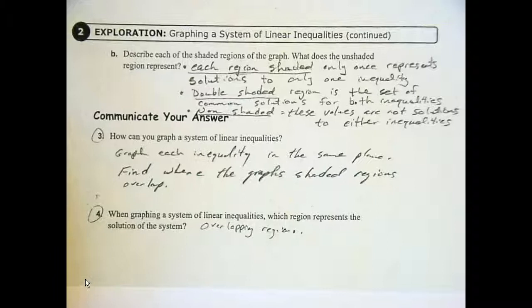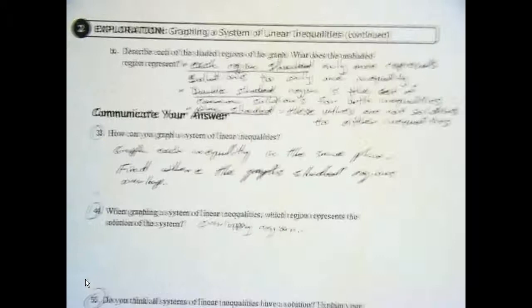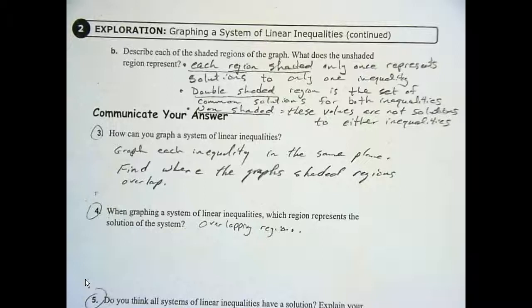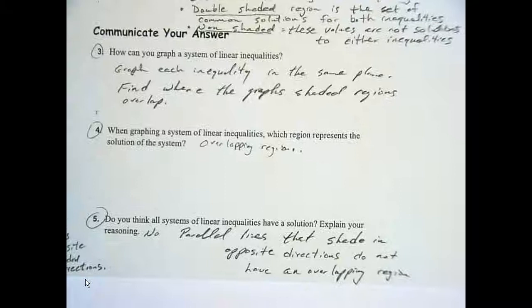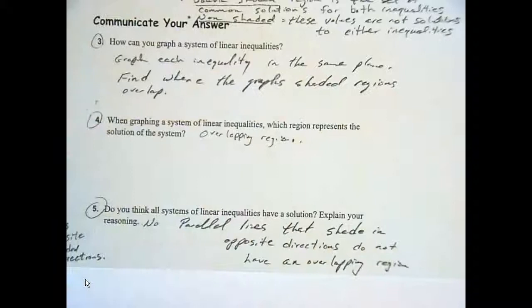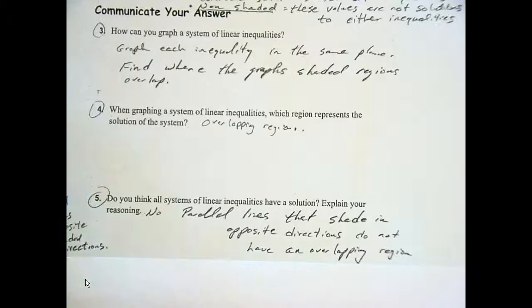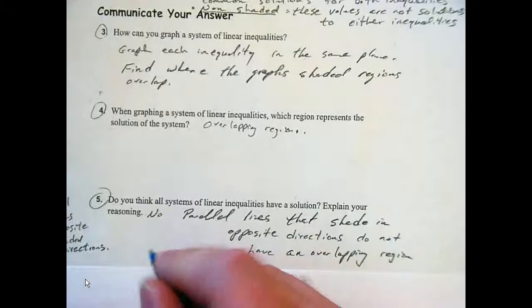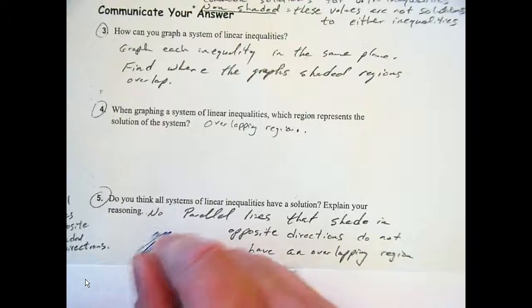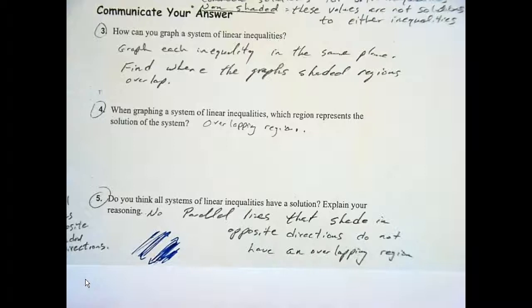Number three, do you think all systems will have a solution? When won't they? Yeah, parallel lines might not. It doesn't mean they always won't. Parallel lines that shade in opposite directions. Yeah, number five, I'm sorry. Question three on this page. The third question on this page. But, good call. Parallel lines that shade in opposite directions do not have an overlapping region. And so, if you think about that, if you think of parallel lines like this, and one shading up above, and the other one shading down below, those don't overlap. That would be a no solution.